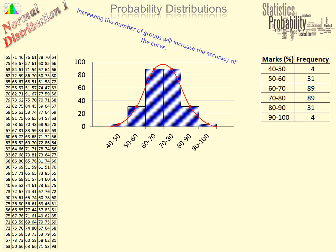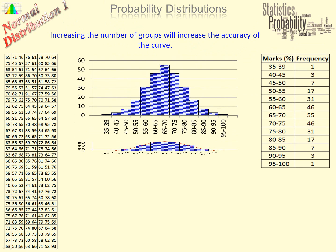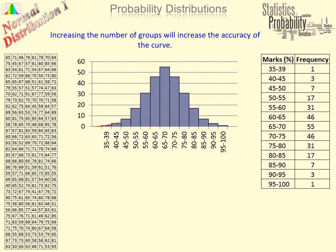We can increase accuracy by increasing the number of groups. That's now eight groups instead of six. Now we have thirteen groups — it's the same set of data each time.